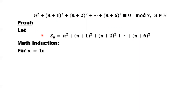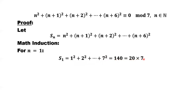Many of you know this method. The general idea: we want to prove that if n equals one it is true, then we assume if n minus one is true, can we prove for n equals n it is also true. Now for n equals one, S(1) equals one squared plus two squared until seven squared. You can calculate it — this is 140, which is 20 times seven. So we do have a factor of seven, and S(1) is divisible by seven. We use this mathematical notation: S(1) has a remainder of zero when divided by seven.